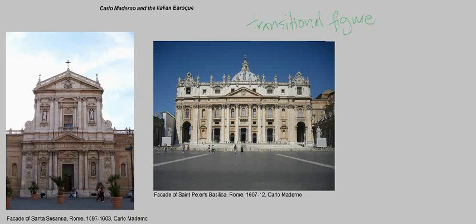The two images we're going to look at today are the facade of Santa Susana, which you see on the left, and the facade of St. Peter's Basilica, which you see on the right. These are arguably two of his most important building facades. Santa Susana was one of his first commissions, and the facade is very typical of Carlo Maderno's facades — with two levels, the triangular pediment at the top, the scrolling volutes at the side, and classical elements including the division of space with columns and pilasters, as well as a strong focus on the central portal.